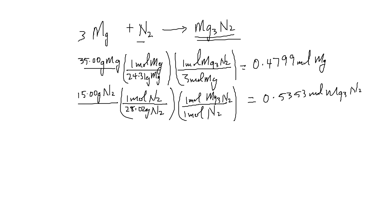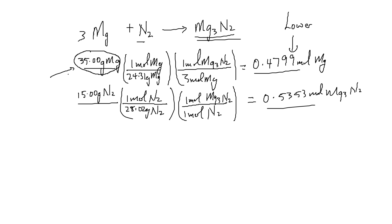At this juncture, what we need to do is compare 0.4799 to 0.5353. The first value — from magnesium — is lower. Therefore, magnesium is the limiting reactant in this particular situation, which means that nitrogen, being the only other reactant, will be the excess reactant.